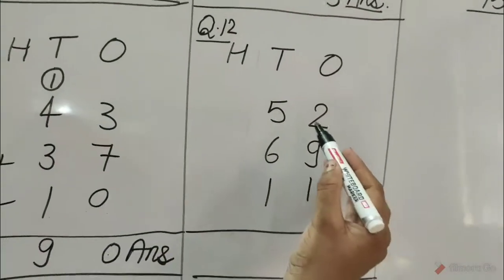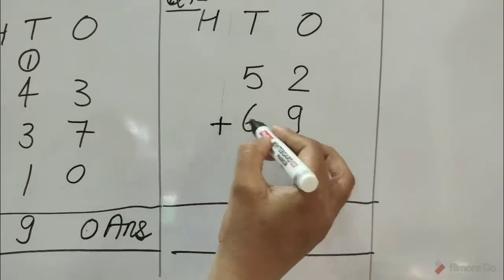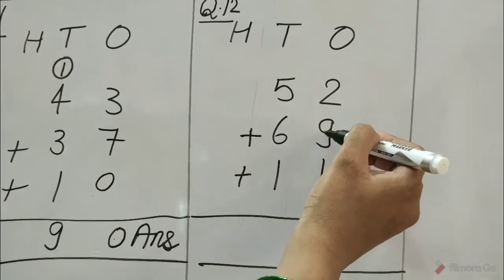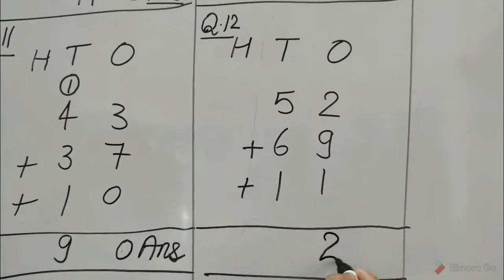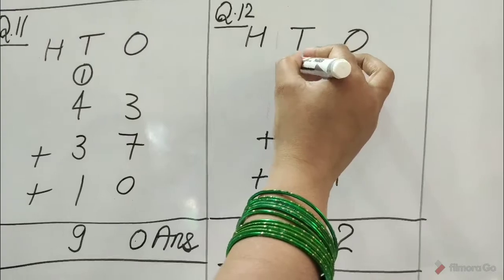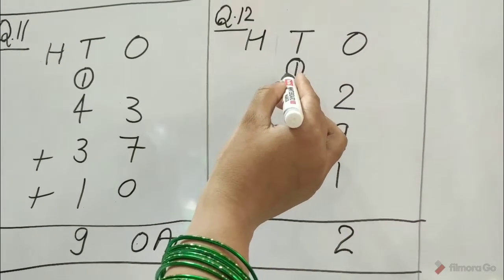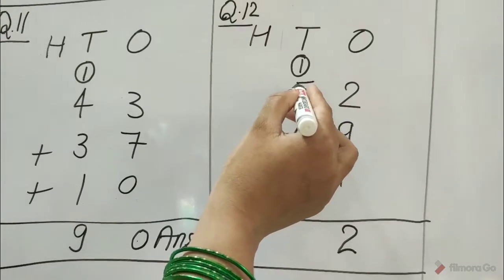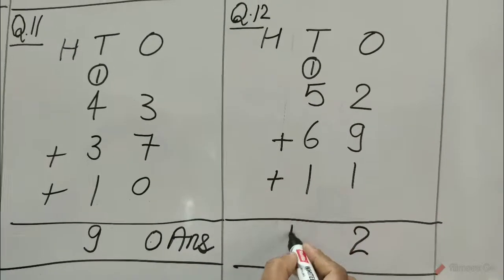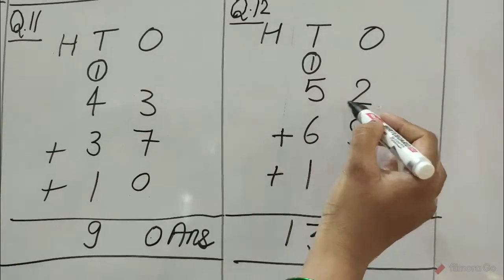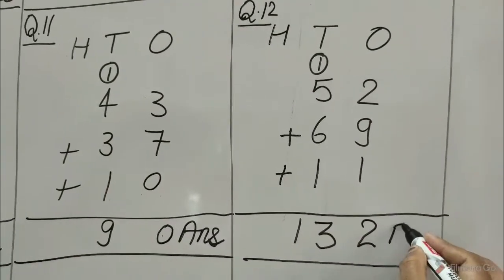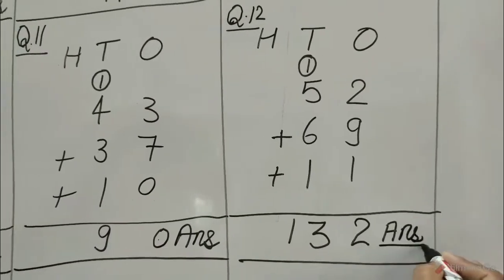Question number 12: 52 plus 69 plus 11. 2 plus 9 is equal to 11, plus 1 is equal to 12. 12 means 1 ten and 2 ones. Write 2 under the ones and carry 1 at tens. Now add tens: 1 plus 5 is equal to 6, 6 plus 6 is equal to 12, 12 plus 1 is equal to 13. So, 52 plus 69 plus 11 is equal to 132. Write answer.